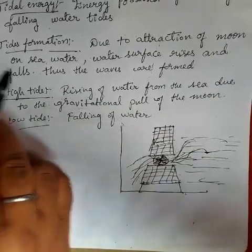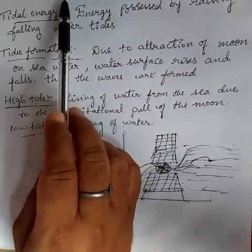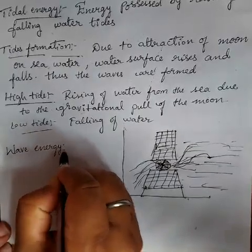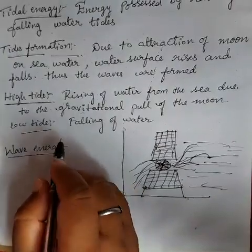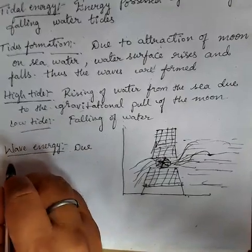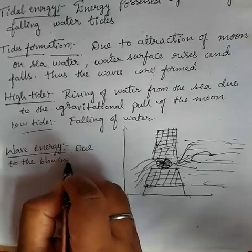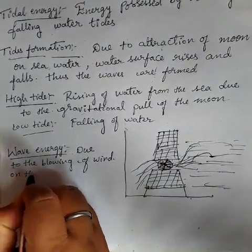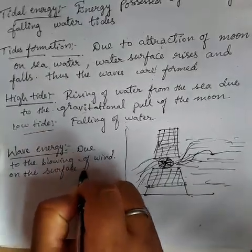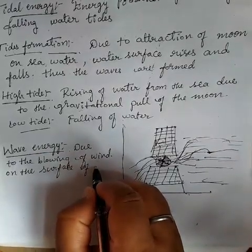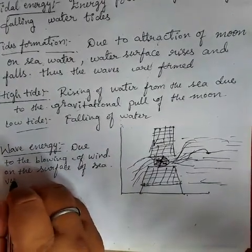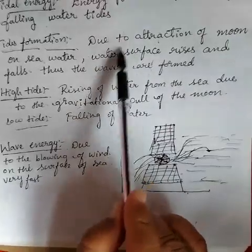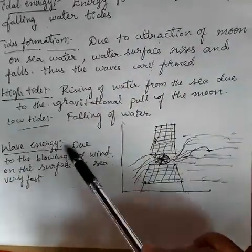Now we go to another type of energy, that is wave energy. There is a difference between wave energy and tidal energy. Wave energy is formed due to the blowing of wind on the surface of the ocean or sea. Tidal energy is formed due to the gravitational pull between the moon and the sea, but waves are formed by the blowing of wind.